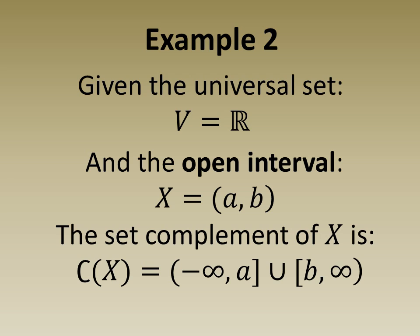In Example 2, the universal set is the set of real numbers and the set X is the open real interval from a to b. The complement of X is a union of the unbounded half-open interval from negative infinity to a and the unbounded half-open interval from b to infinity.